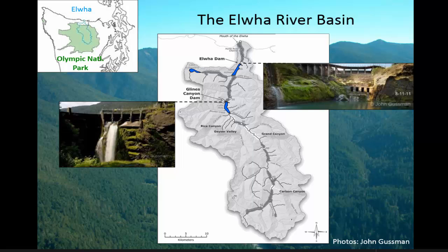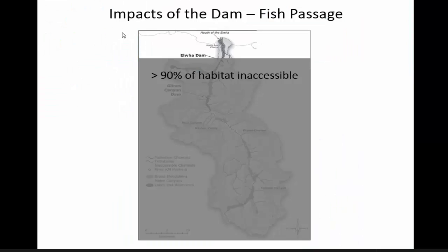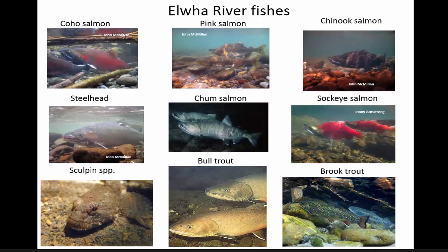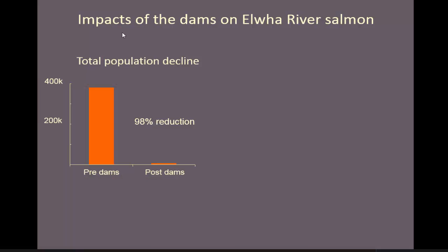With the dams, it basically blocked off 90% of the watershed to anadromous fish — fish that spawn in freshwater, move out to saltwater, and then come back. Some of the species affected include all different kinds of salmon, sculpin, and non-native species including brook trout. One thing we know is that there's been a big decline in salmon over the last hundred years. The Elwha is no different — about a 98% reduction in the population.